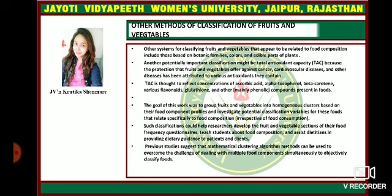Total antioxidant capacity also reflects glutathione and mainly phenolic compounds present in foods. The goal of this work was to group fruits and vegetables into homogenous clusters based on their food component profiles, and to investigate potential classification variables for these foods that relate specifically to food composition. Such classification could help researchers develop the fruits and vegetables section of food frequency questionnaires, teach students about food composition, and assist dietitians in providing dietary guidance to patients and clients. Previous studies suggest that mathematical clustering algorithm methods can be used to objectively classify foods. That's all for this session. Thank you.